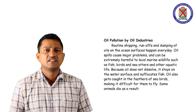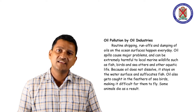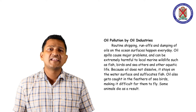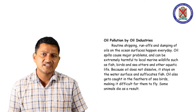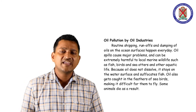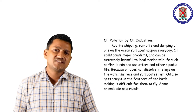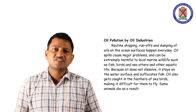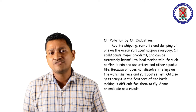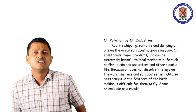The next type of pollution is oil pollution from oil industries. During the shipping of petroleum products, runoff and dumping of oil on the ocean surface happen every day. Oil spills cause major problems and can be extremely harmful to local marine wildlife such as fish, sea birds and sea otters. Because oil does not dissolve, it stays on the water surface and suffocates fish, reducing their productivity. Oil also gets caught in the feathers of sea birds, making it difficult for them to fly, and some animals die as a result.